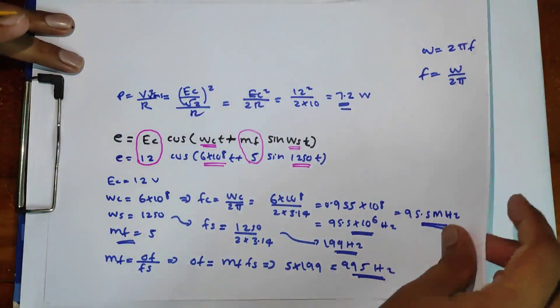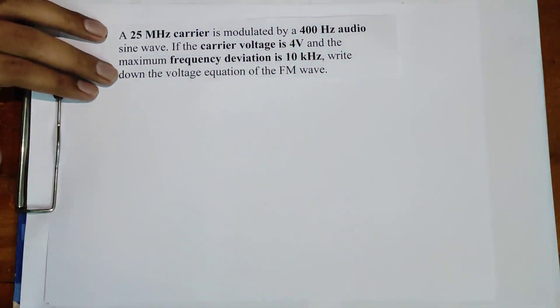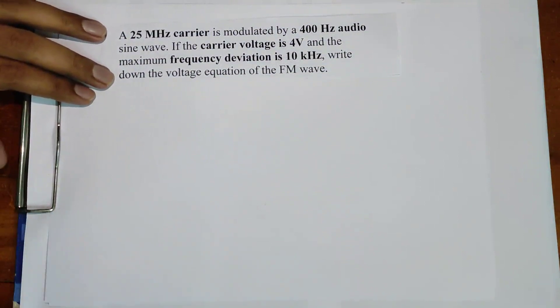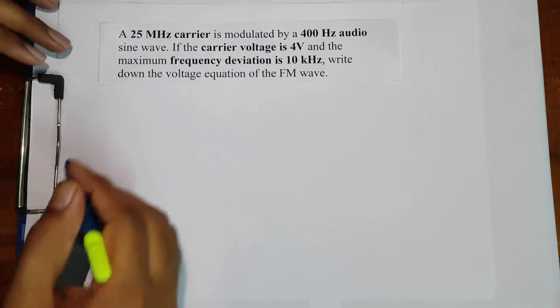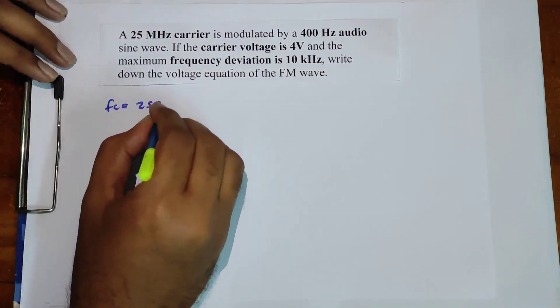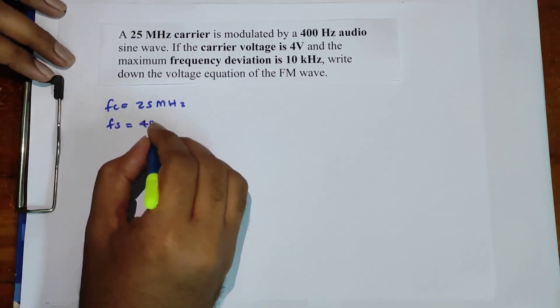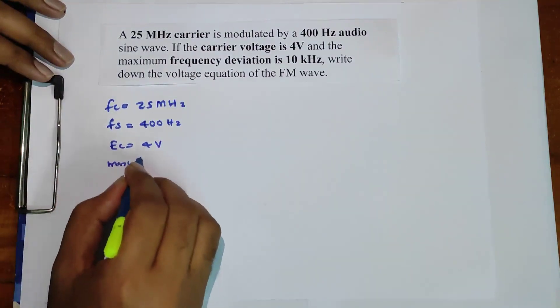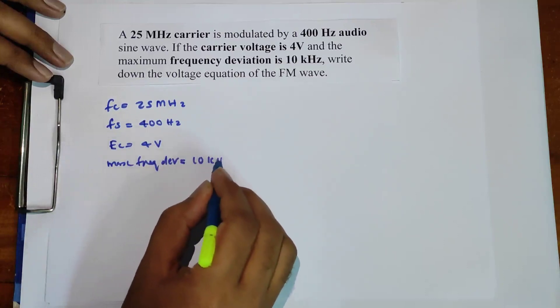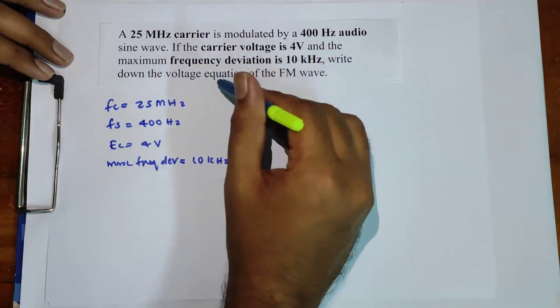Now let us solve another problem. The question is: a 25 megahertz carrier is modulated by a 400 hertz audio sine wave. The carrier voltage is 4 volts and the maximum frequency deviation is 10 kilohertz. Write down the voltage equation of the FM wave. So the given values are: Fc = 25 MHz, Fs = 400 Hz, Ec = 4 volts, and delta-F = 10 kHz.